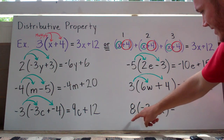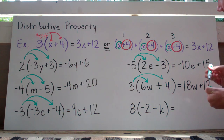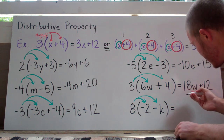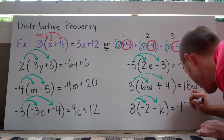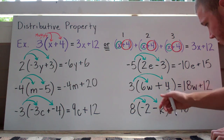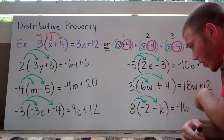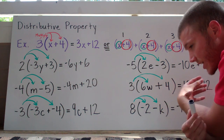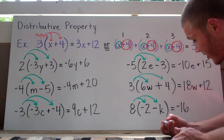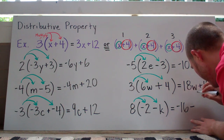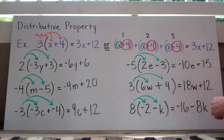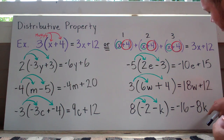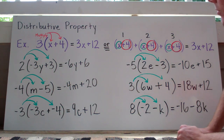Last one: 8 times (negative 2 minus k). Drawing the arrows in: 8 times negative 2 is negative 16. Then 8 times negative k — remember, if you just see a variable with no number, it's 1 — so 8 times negative 1k: 8 times negative 1 is negative 8, attach the k, giving us minus 8k. So the answer is negative 16 minus 8k.